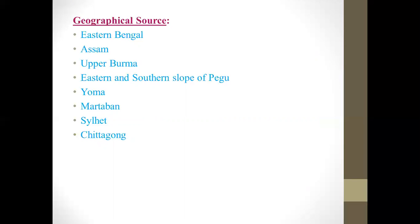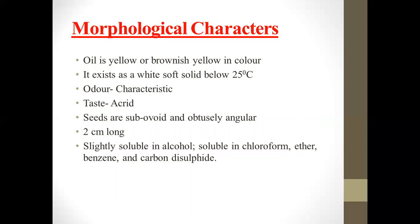These are the geographical sources of Chaulmoogra oil. Regarding morphological characters: the oil is yellow or brownish yellow in color; it exists as a white soft solid below 25 degrees Celsius; it has a characteristic odor and taste. The seeds are sub-ovoid and obtusely angular, about two centimeters long. The oil is slightly soluble in alcohol and soluble in chloroform, ether, benzene, and carbon disulfide.